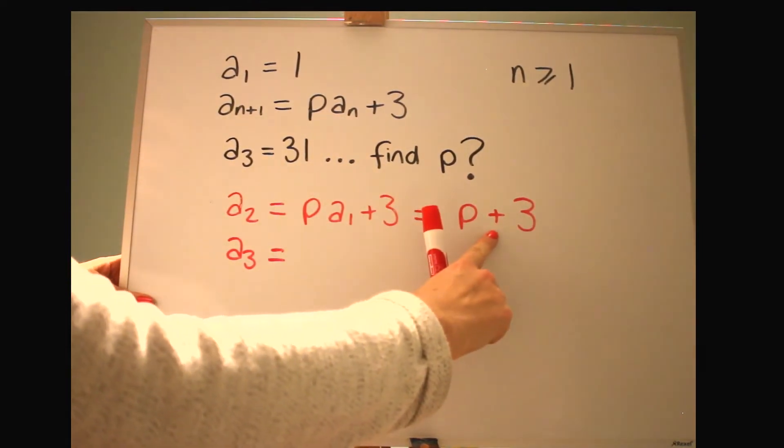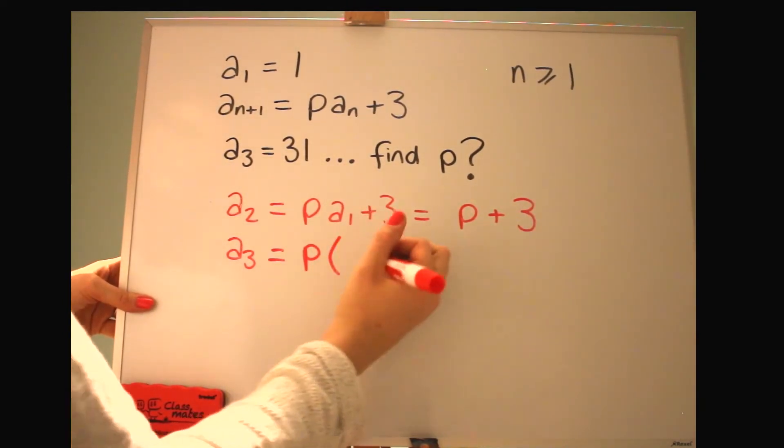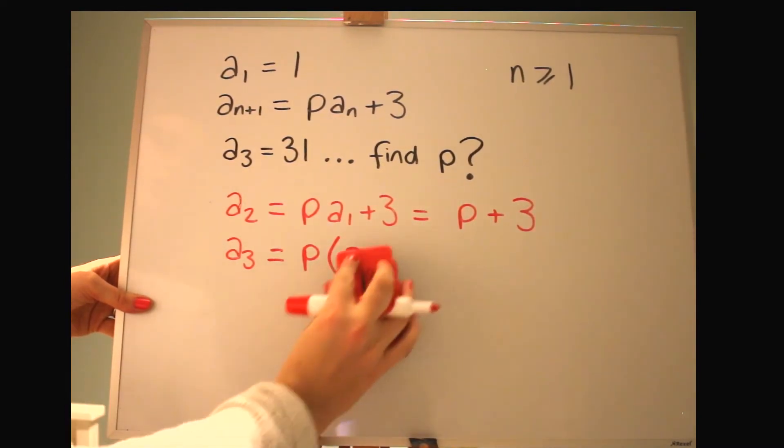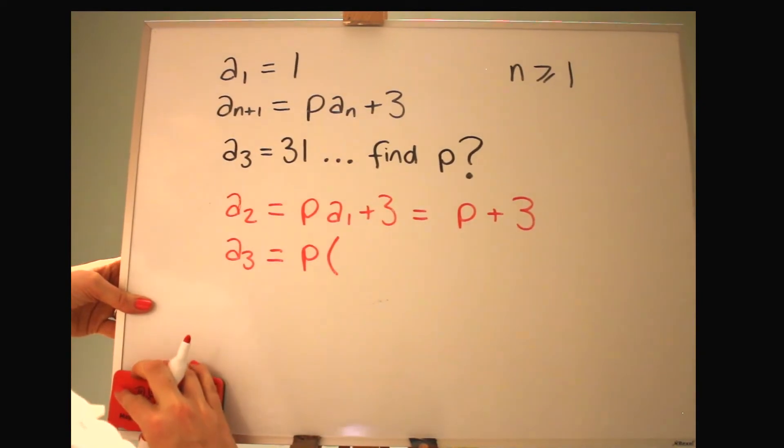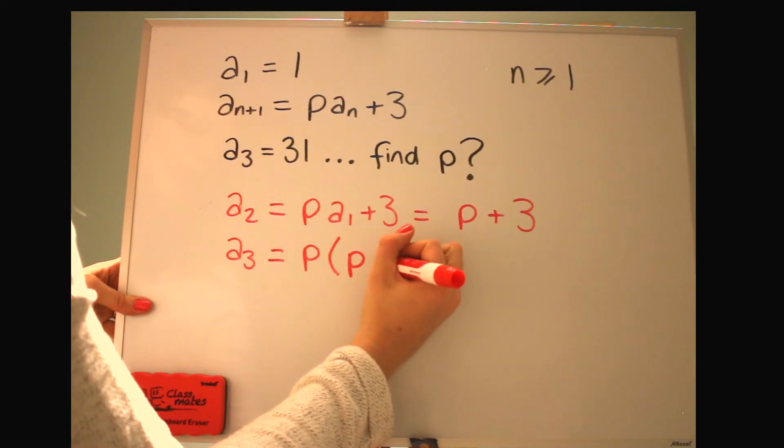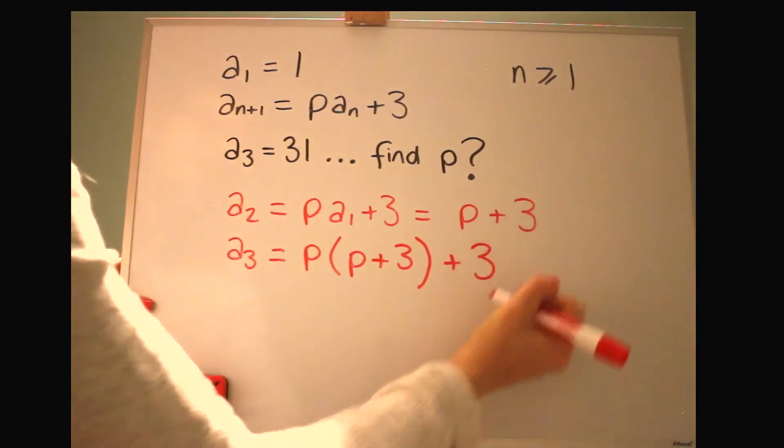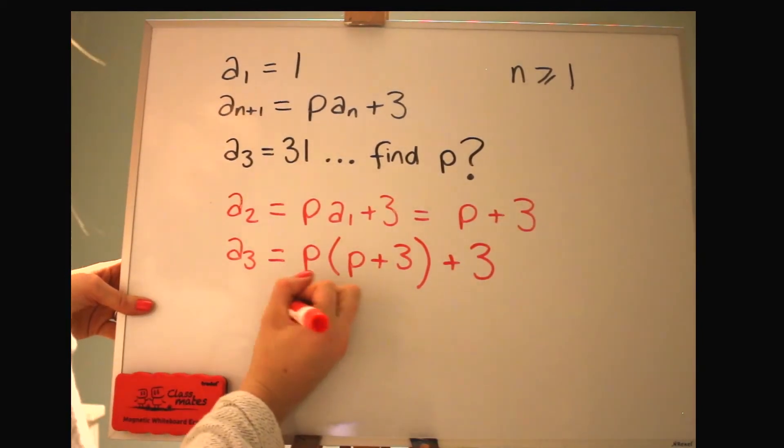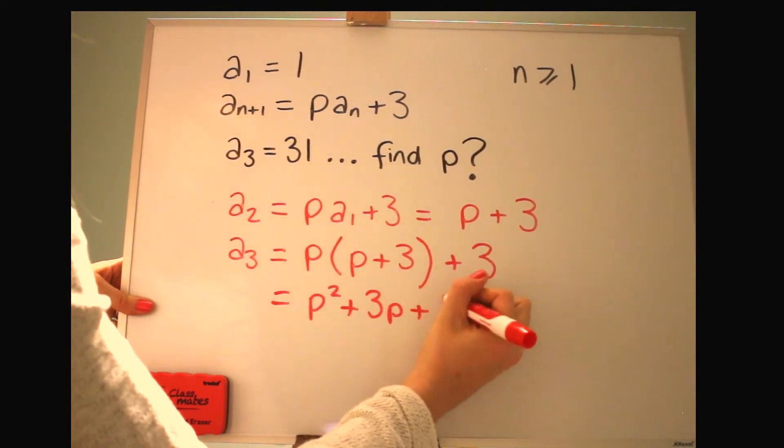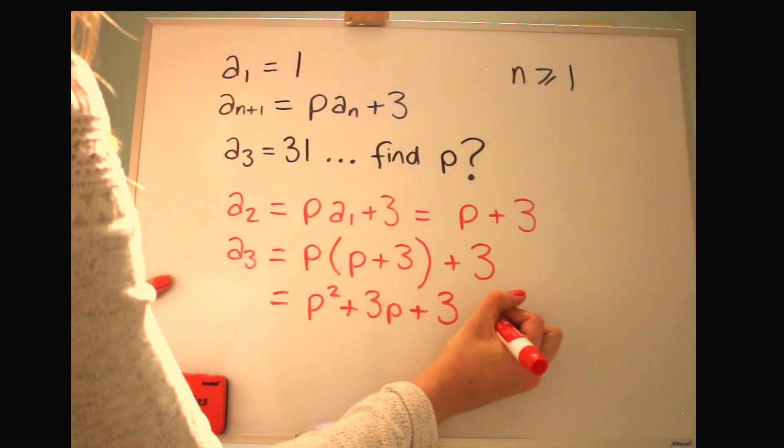So that's our second term. Then we can find a3. So using that as our a2, it's going to be P multiplied by... I hope you're happy if I could write a2 but I'm just going to skip that step just to save some space. Obviously include that if you need to. So our a2 here is P plus 3, and then adding 3 at the end. Then we can multiply out the brackets and we get that. Then we know what this equals, so we can set up an equation because it equals 31.